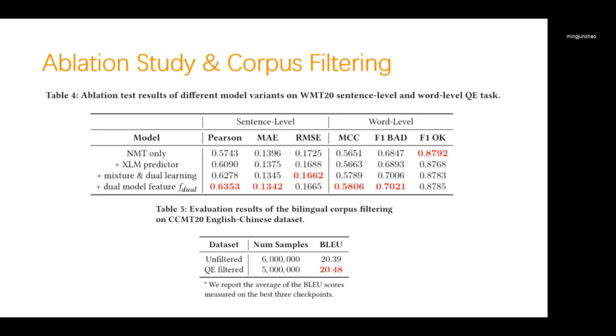We have also conducted an ablation analysis by incrementally accommodating different modules and methods to a base model. From the results shown in this table, we can observe that there is significant performance improvement each time a module is added, which verifies the effectiveness of our design. We also perform an experiment on bilingual corpus filtering by applying our sentence-level QE model to evaluate the quality of samples in the parallel corpus. Specifically, we use a 6 million parallel dataset and filter out 1 million samples with the highest error prediction scores and achieve the performance improvements with less training data, which is a good indication that QE results can be potentially applicable to bilingual corpus filtering.